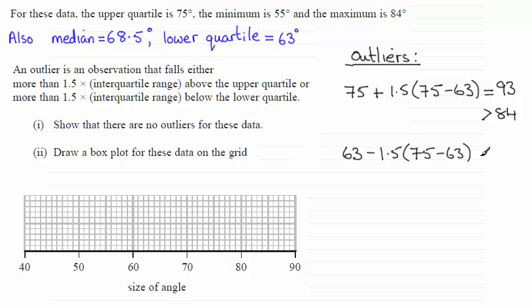And if you work this out it comes to 45 and that is clearly less than the minimum value of 55 degrees. So we've got no outliers in this lower region.